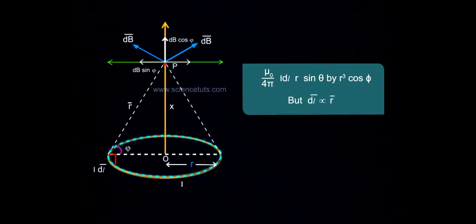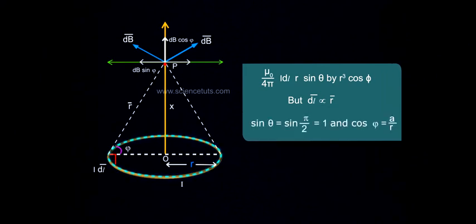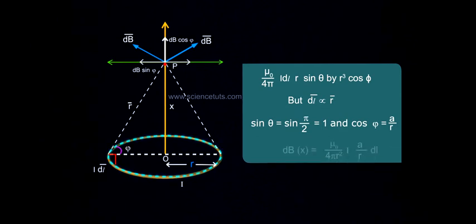from the figure, dl-bar perpendicular to r-bar, sin theta equals sin π by 2 equals 1, and cos phi equals a by r. Therefore,